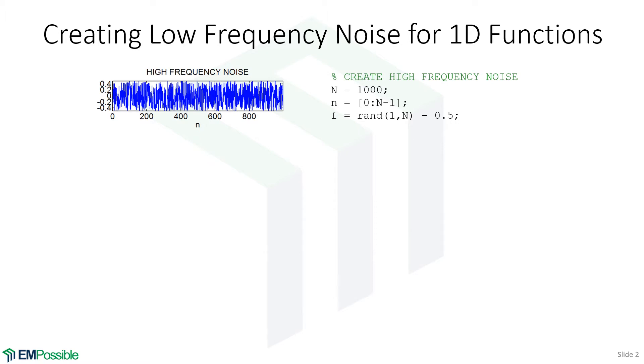So first, let's just create a bunch of high frequency noise. I'm gonna choose a thousand points. I'll create an array that goes zero to 999. I will then call the rand function to create a thousand random numbers that go from zero to one. And then I'm subtracting 0.5 so that I get random numbers going from minus 0.5 up to positive 0.5. And when I plot that, it looks like this.